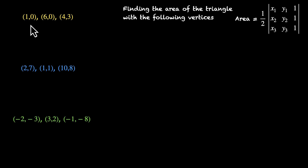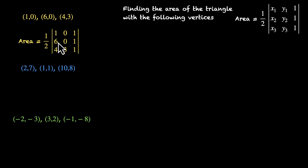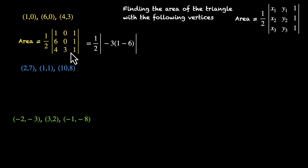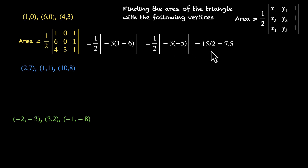Let's do this together. Area of the first triangle equals half times the determinant of 1, 0, 1 / 6, 0, 1 / 4, 3, 1. Because we are finding area, we take the magnitude of this determinant. The second column has two 0s, so it's most convenient to expand along it. With signs –, +, –, we get: half |–3 × (1×1 – 6×1)| = half |–3 × (–5)| = half of 15 = 7.5. So the area of this triangle is 7.5.